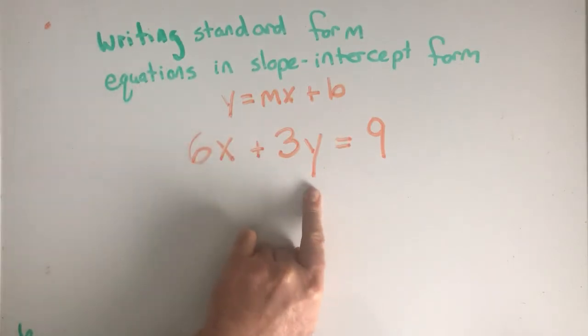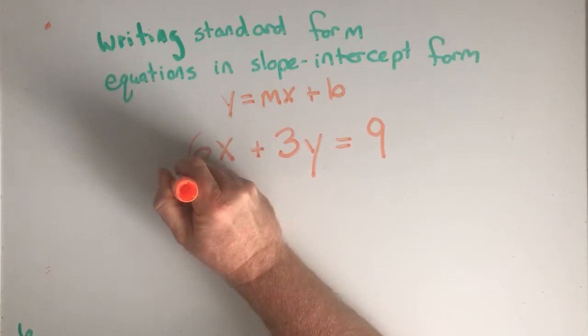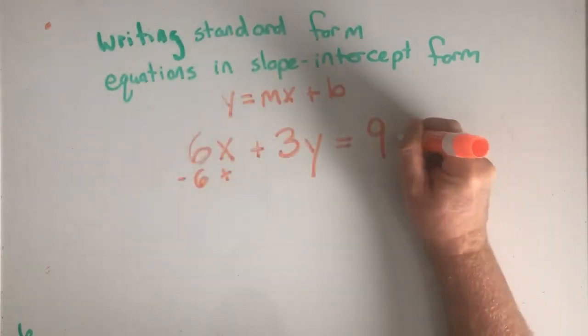I want the y to be by itself. So what's over here with the y? Well, there's a 3. There's also a 6x. First thing I'm going to move is the 6x. It's a positive 6x, so the way I move it is I subtract 6x from both sides.